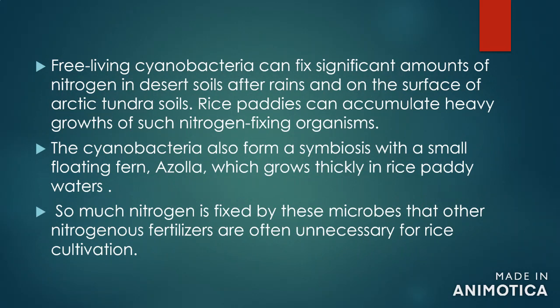Free-living cyanobacteria can fix significant amounts of nitrogen in desert soils after rains and on the surface of arctic tundra soils. Rice paddies can accumulate heavy growth of such nitrogen-fixing organisms. The cyanobacteria also form a symbiosis with a small floating fern, Azolla, which grows thickly in rice paddy waters. So much nitrogen is fixed by these microbes that other nitrogenous fertilizers are often unnecessary for rice cultivation.